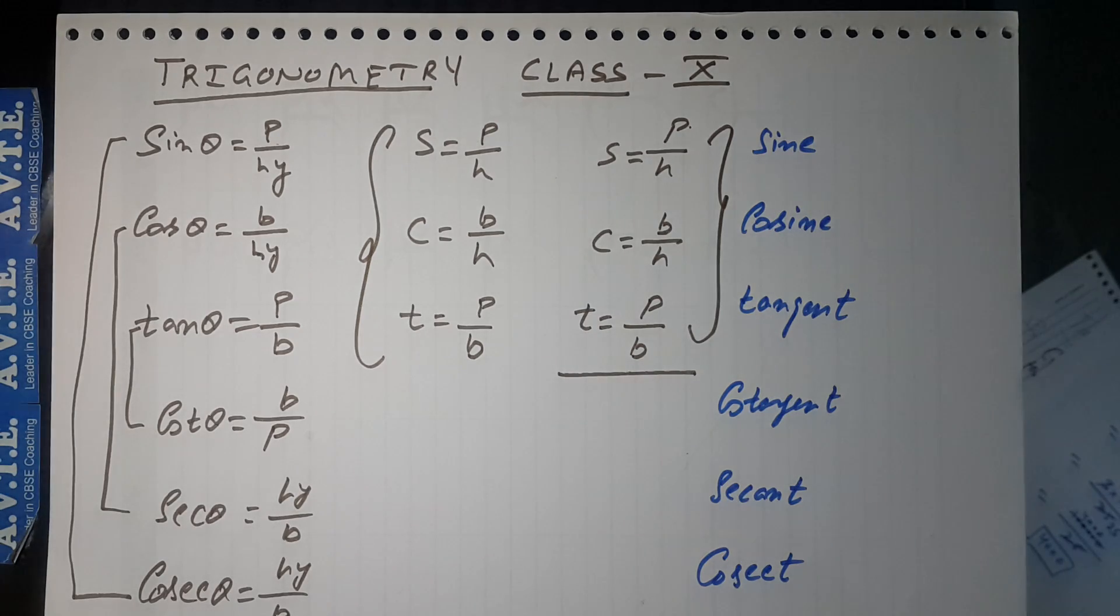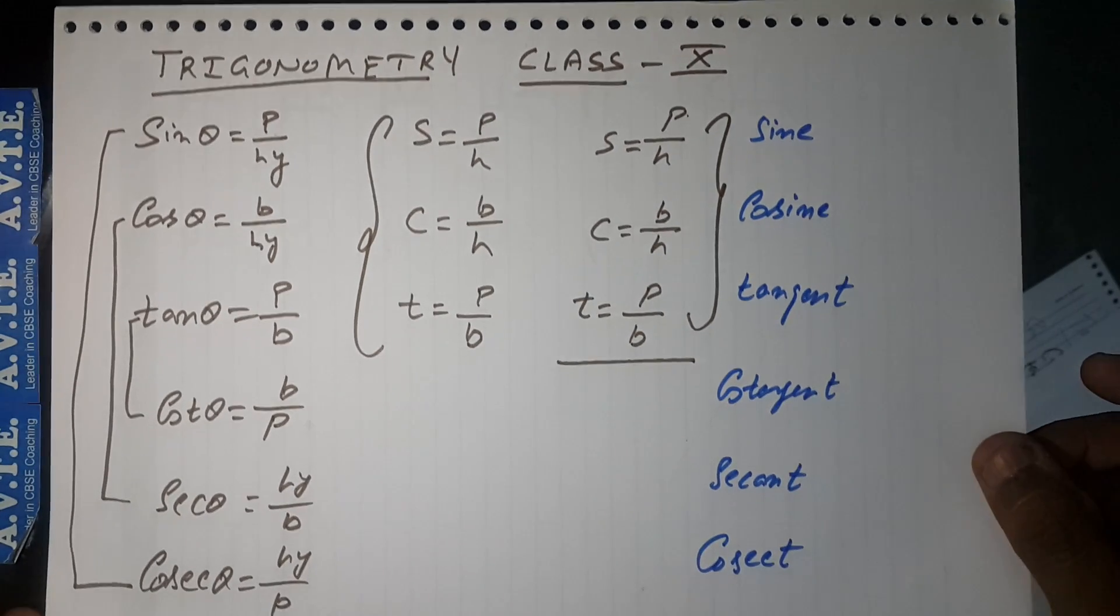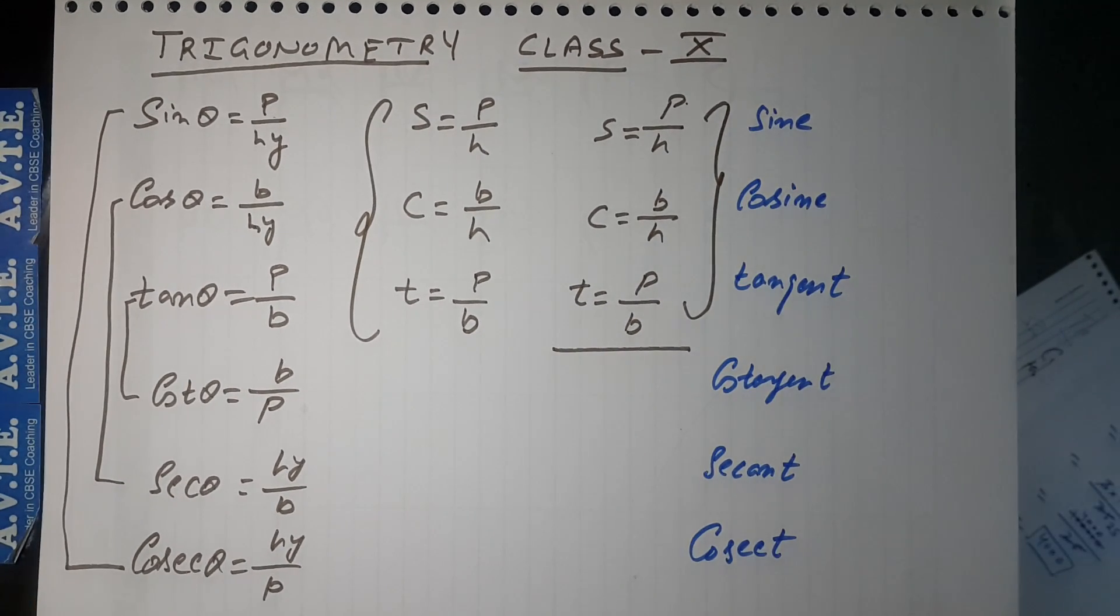Again, listen: sin θ is perpendicular upon hypotenuse, cos θ is base upon hypotenuse, tan θ is perpendicular upon base, cot θ is base upon perpendicular, and secant θ is hypotenuse upon base.